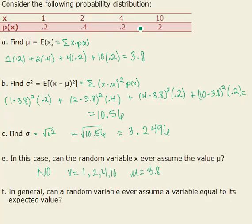But in general can a random variable ever assume a variable equal to its expected value? Sure, I'll give you a real quick example. Let's say our x's are 1, 2, and 3 and each probability was equal a third. If you calculate this out you find your mu to be 2. Well 2 is a variable in our x's so yes it could happen.